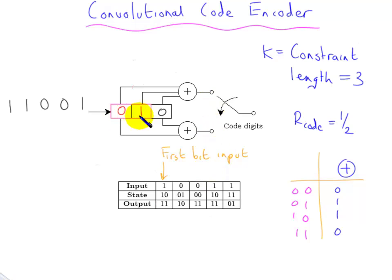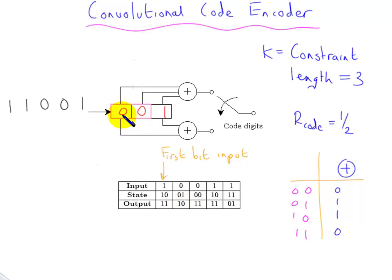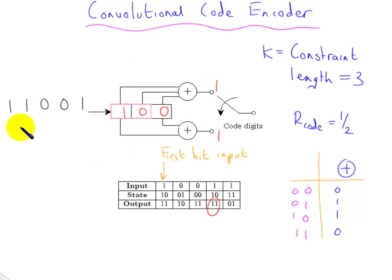Then the one moves along and we insert a zero — this register is still zero — so we get a one here, and this gives you a zero, so we get the second code word. Then the one moves along further, and zero and zero enter, and now we have one and zero giving a one. And then the zero moves along, and the one comes in, and in this case we have one and one. Then finally the last one enters, the register contents are one, one, zero — an even number of ones — so that gives zero.